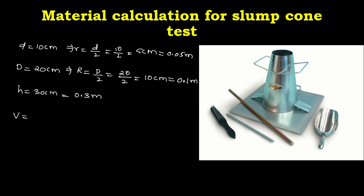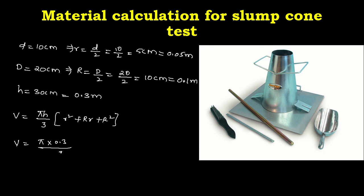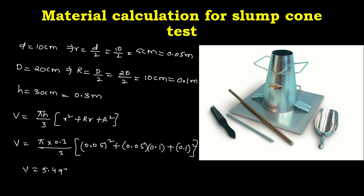The slump cone is a frustum cone — both top and bottom are open. The volume formula is: V = (π·h/3) × (r² + R·r + R²). Substituting: h = 0.3, r = 0.05, R = 0.1. The volume of the complete cone comes out to be 5.497 × 10⁻³ m³. This is the total amount of concrete that can fit in the cone.